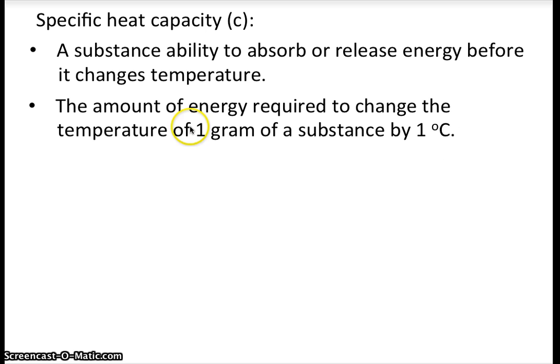So the units for that would be how much energy per one gram by one degree C. So it's joules per gram degrees C. Joules is in the numerator and grams and degrees C are in the denominator. So how much energy in joules it takes to change one gram of a substance by one degree Celsius.